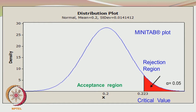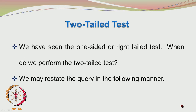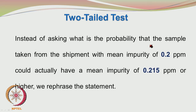We are claiming that the samples are coming from a population of mean impurity 0.2 ppm. We have seen the one-sided or right-tailed test. When do we perform the two-tailed test? We may restate the query in the following manner: instead of asking what is the probability that the sample taken from the shipment with mean impurity of 0.2 ppm could actually have a mean impurity of 0.215 ppm or higher, we rephrase the statement.